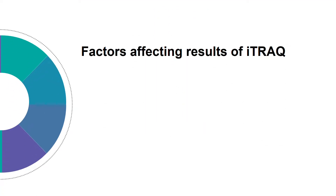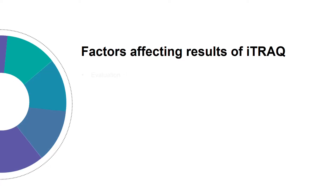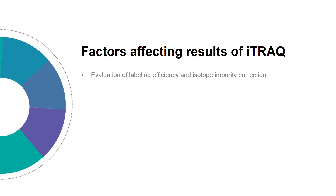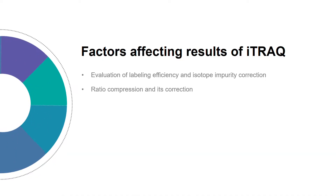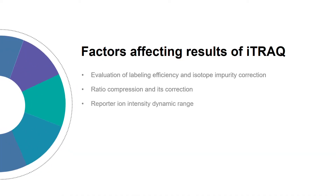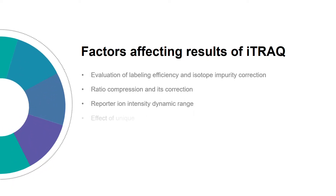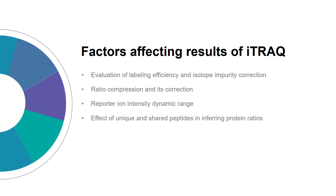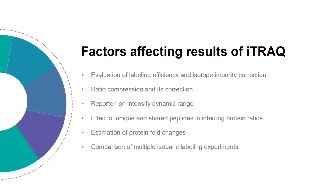For a better result, there are some factors we should consider. The first one is the evaluation of labeling efficiency and isotope impurity correction. The ratio compression and its correction, reporter ion intensity dynamic range, as well as the effect of unique and shared peptides in inferring protein ratios, are also important factors. Finally, the estimation of protein fold changes and comparison of multiple isobaric labeling experiments may also affect the results.